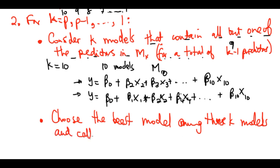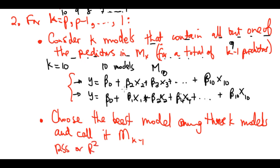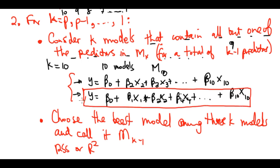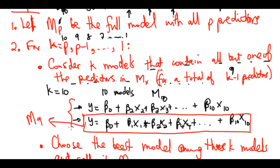We choose the best model and call it M_{k-1}. For k equal to 10, we removed one predictor and choose the best model using RSS or R². Let's say the best model was the one where we removed x₃ — we call it M_{k-1}, which is M_9. Then this process repeats for k equal to 9.